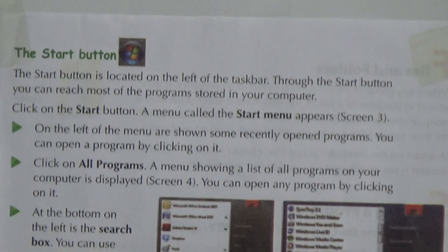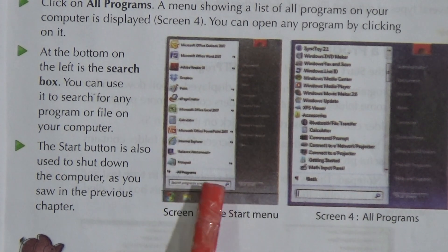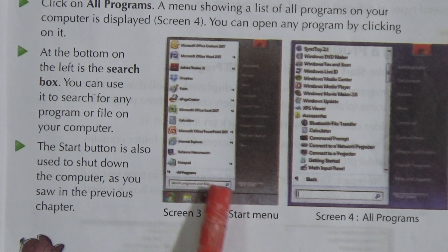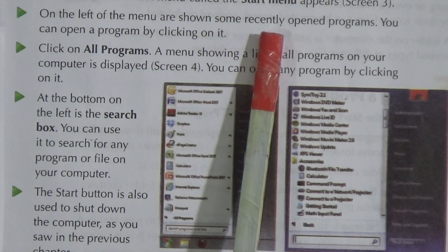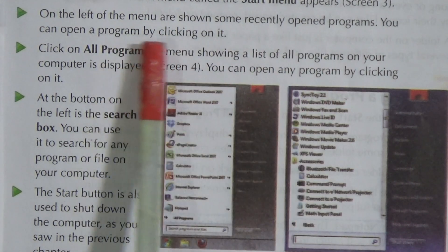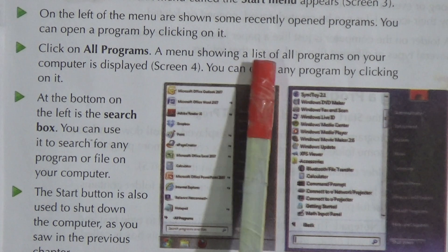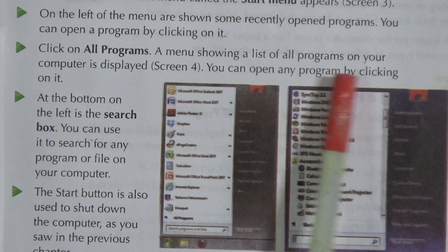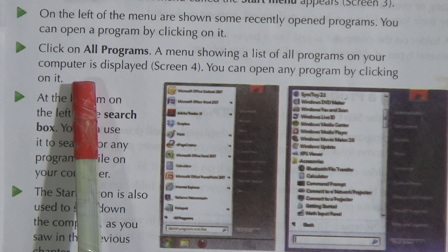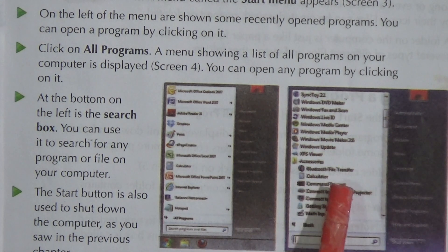Here is the start button at the left of the taskbar. If you click on it, a menu like this appears — this is called the start menu. On the left of the menu are shown some recently opened programs. You can open a program by clicking on it. Click on 'All Programs' and a menu showing a list of all programs on your computer is displayed. If you click on 'All Programs,' all the programs in the computer will be shown in a list.